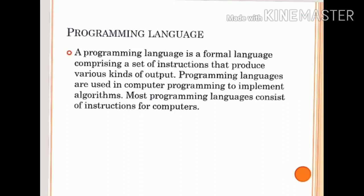In this subject, Introduction to Programming, we are discussing the language called C. First of all, we have to discuss what is a programming language. A programming language is a formal language comprising a set of instructions that produce various kinds of output. Most programming languages consist of instructions for computers, and they are used in computer programming for implementing algorithms.